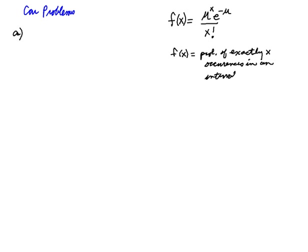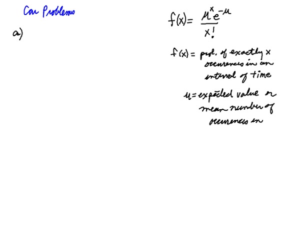In our case, that interval is an interval of time, in other words, in the past year. Also, μ is the expected value or the mean number of occurrences in that same interval.